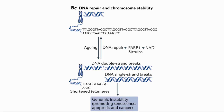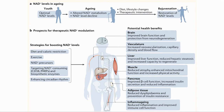DNA repair is impacted as this is executed by PARP1 and the sirtuins, both of which require NAD. This leads to genetic instability and either cell death via apoptosis or the cell becoming senescent. Rebuilding NAD levels seems to reverse some of these effects of aging. We can do this through a healthy diet low in processed foods, calorie restriction, and exercise. We can also take NAD precursors such as NR or NMN, target NAD-consuming enzymes with molecules such as apigenin or quercetin, reduce inflammation and senescent cells, and keep to a regular circadian rhythm.